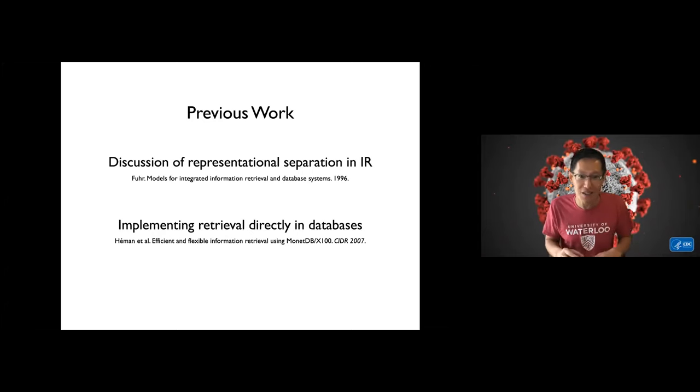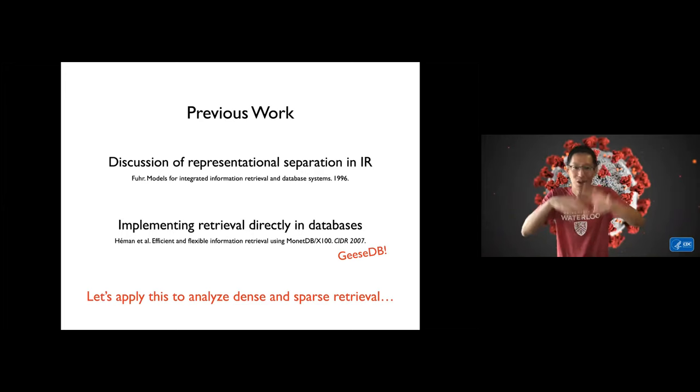Now this is not a new idea, actually. The previous work on this or discussions about representation separation date back to the 90s. Implementing retrieval directly in database dates back over 10 years ago, and in fact earlier this morning you heard about GCB which is one concrete implementation of this logical physical separation. Now let's apply this framework that I'm proposing here to analyze dense and sparse retrieval. We have the logical scoring model and the physical retrieval model and I'm going to use it to sort of describe common techniques that we have.